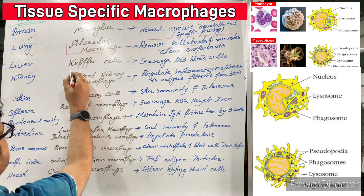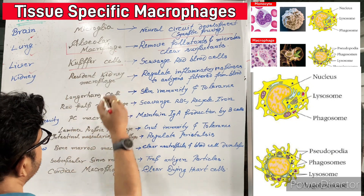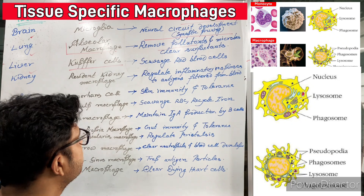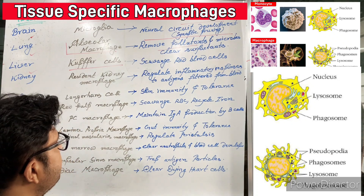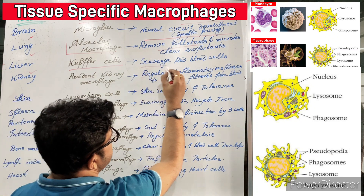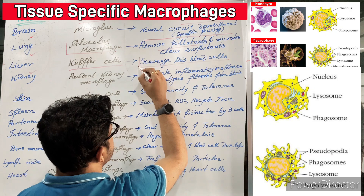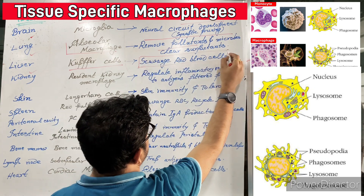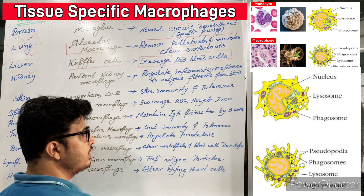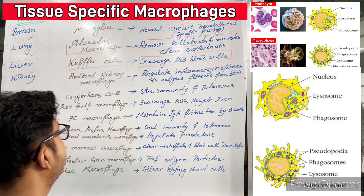Coming to the liver, these are specialized liver macrophage cells called Kupffer cells — so there is a specialized name for them. What do they do? They scavenge red blood cells — they destroy them and help in renewing or making new red blood cells. So mainly they scavenge the RBCs.